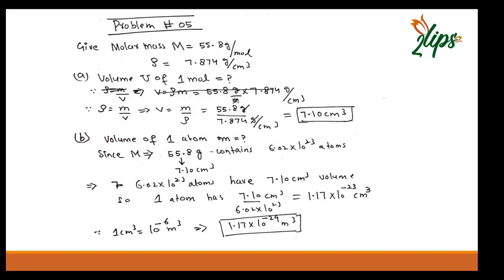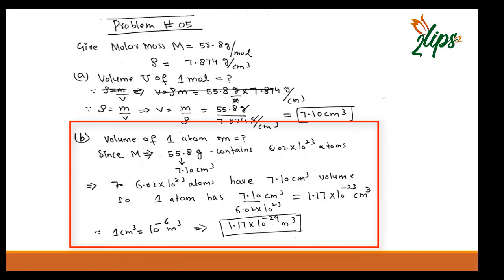In part (b), we find the volume of one single atom. One mole contains 6.02 × 10²³ atoms and has a volume of 7.10 cm³. Dividing, the volume per atom is 7.10 ÷ (6.02 × 10²³) = 1.17 × 10⁻²³ cm³. Since 1 cm³ = 10⁻⁶ m³, we can convert this to SI units.